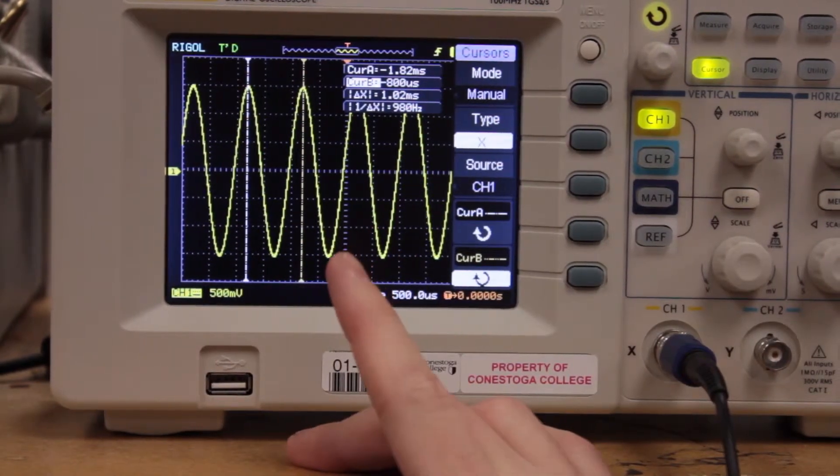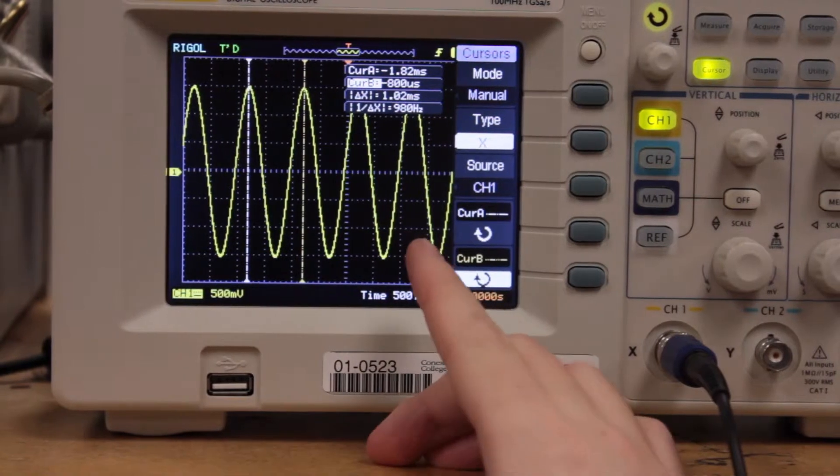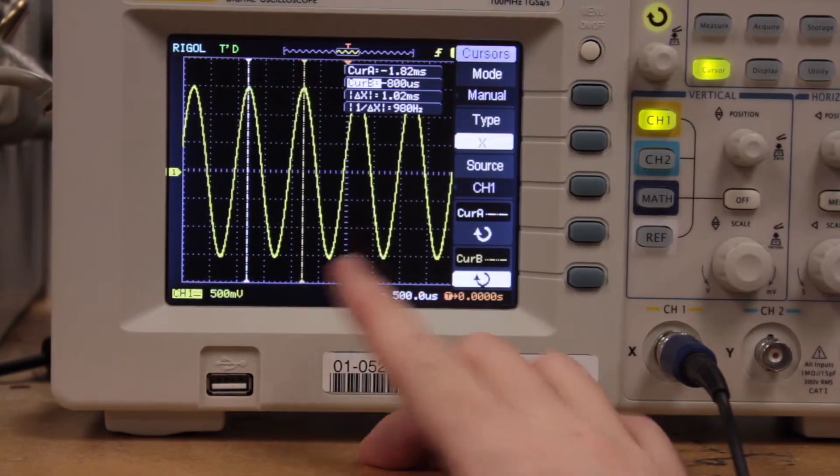To improve the accuracy of this, what we can actually do is measure several waveforms and then divide by the number of waveforms we're measuring.